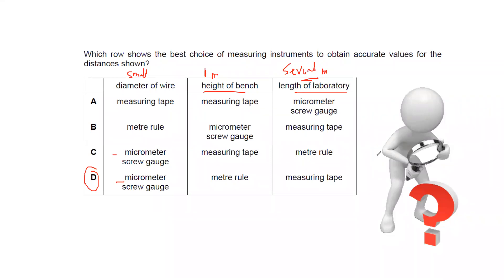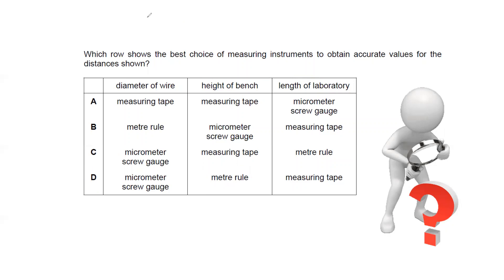To clarify: a regular ruler is about 15–30 cm. A meter rule can measure a maximum of one meter. A measuring tape can measure lengths greater than one meter. So when a question says 'meter rule,' it means it measures up to a maximum of one meter.